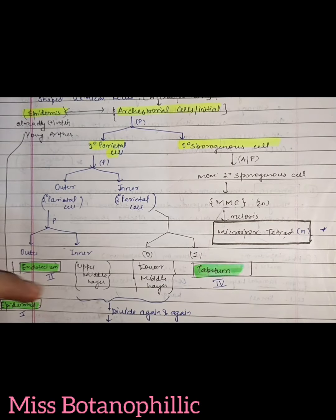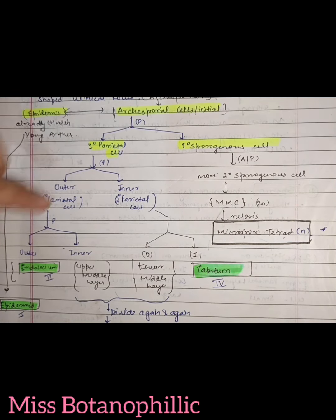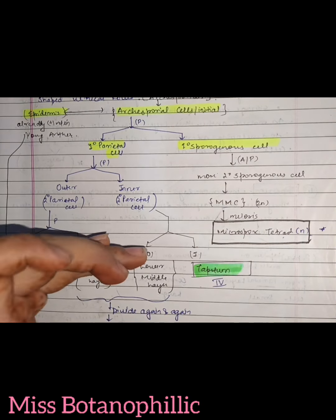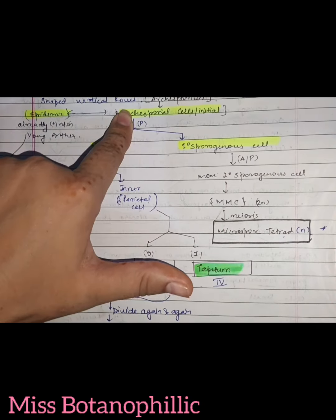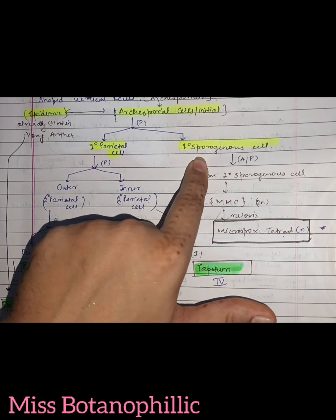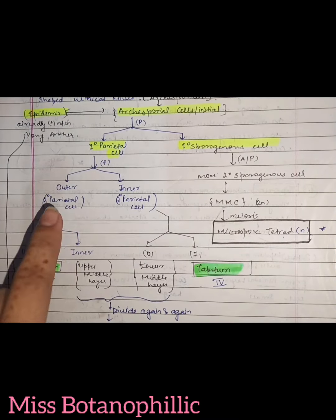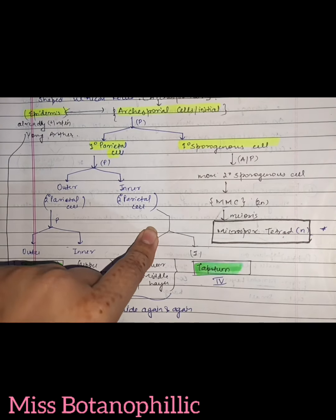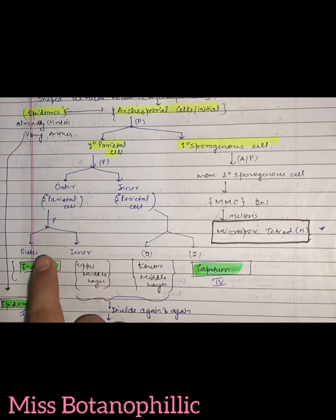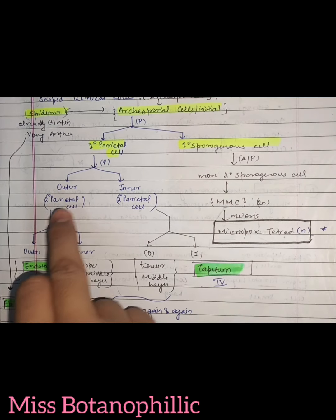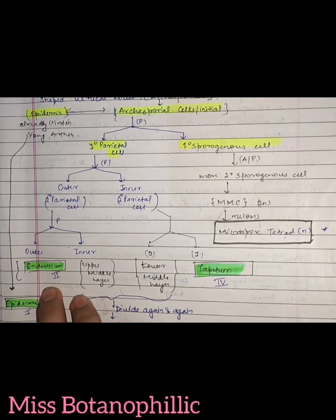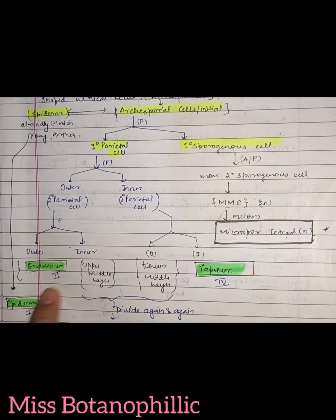The primary parietal cell then undergoes further division to form two secondary parietal cells: the outer secondary parietal cell and the inner secondary parietal cell. The outer secondary parietal cell becomes the endothecium. So the epidermis was present before, and the endothecium is created from the outer secondary parietal cell. The inner secondary parietal cell gives rise to the upper and lower middle layers.